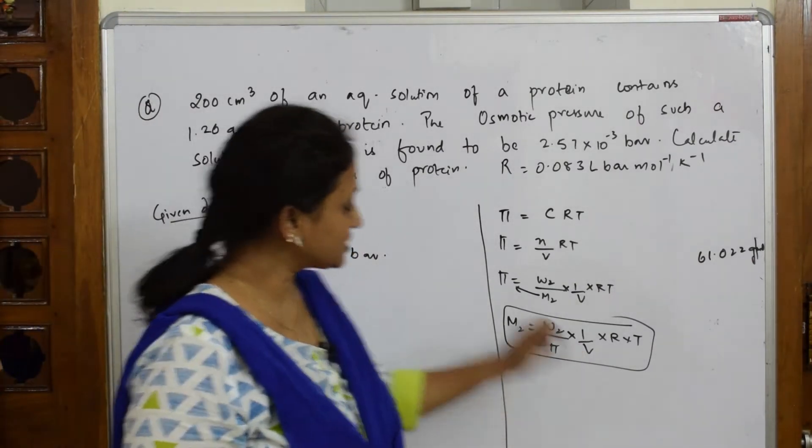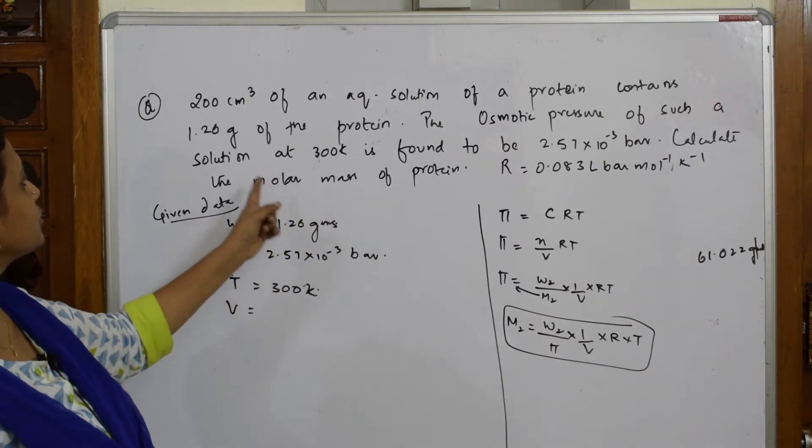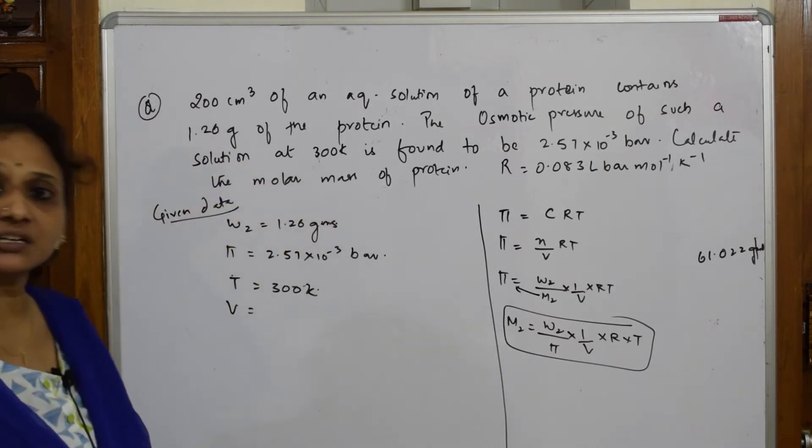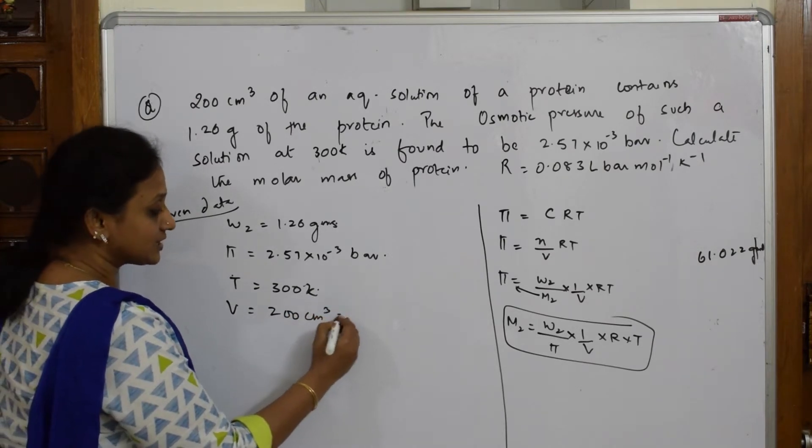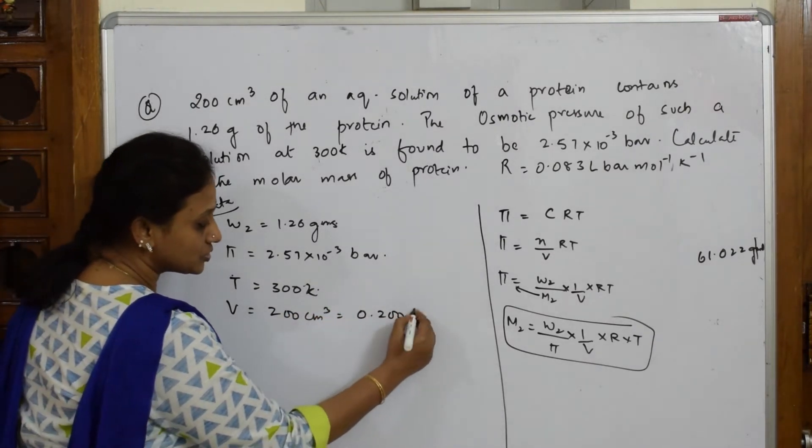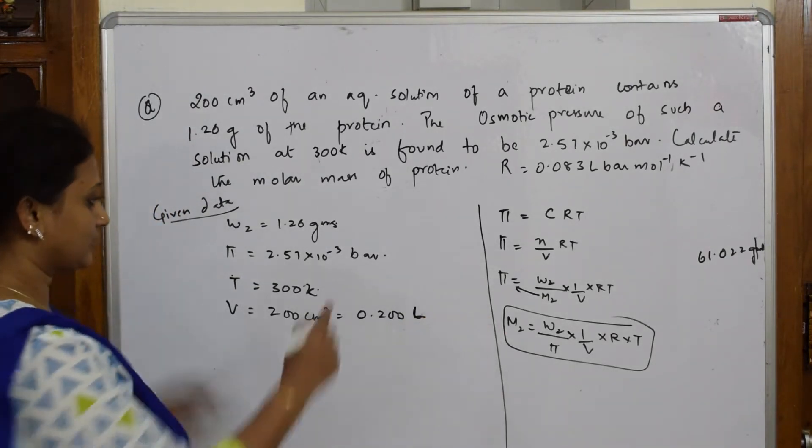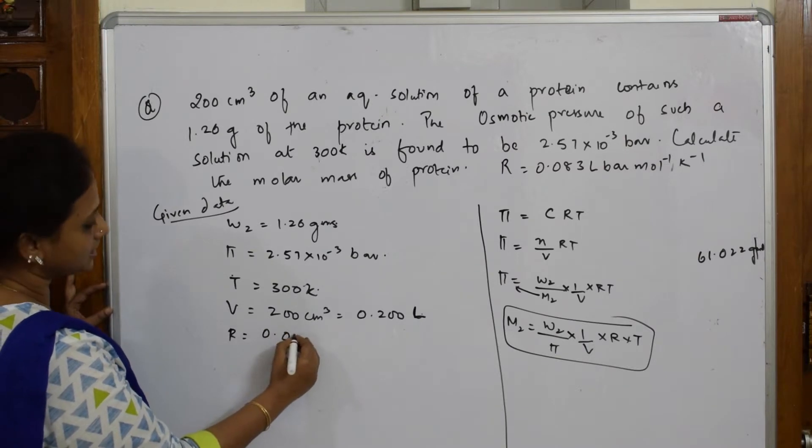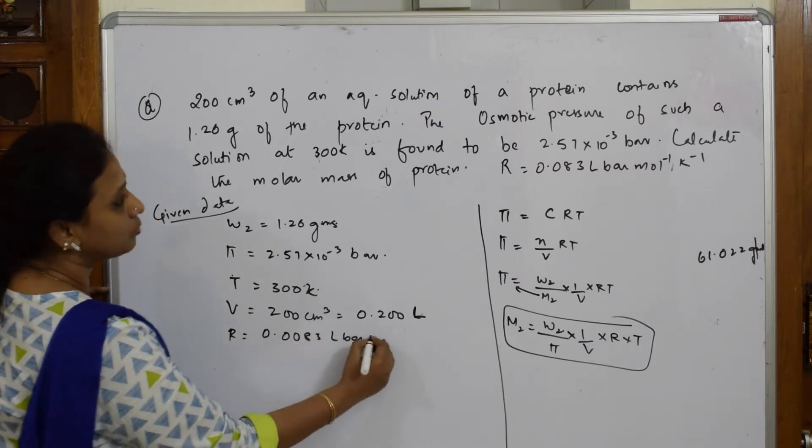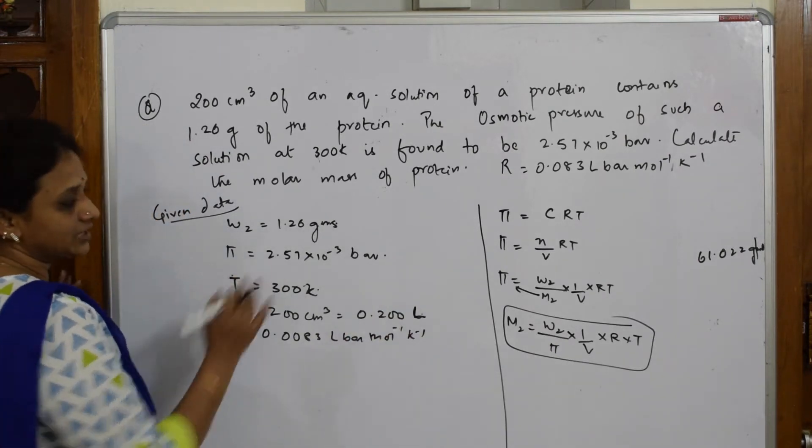What is the volume given to me? I need volume for the formula. 200 centimeter cube is given to me. Volume 200 centimeter cube is nothing but 0.200 liters. R, I need R. R is 0.083, gas constant, L bar mole inverse kelvin inverse. Temperature already given.